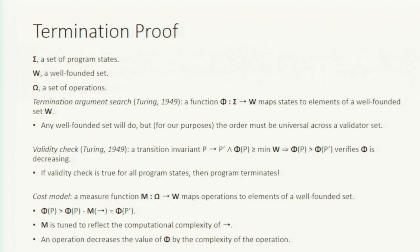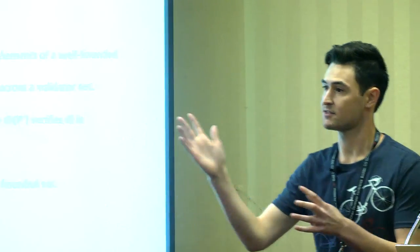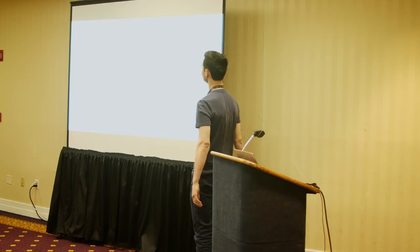The validity check — number two — says that the balance is decreasing. If p and p-prime are states with a transition from p to p-prime, and the balance of state p is greater than the minimum of W, this implies our balance decreases. As long as it's decreasing and we have a bottom, we know we have an endpoint, providing a termination proof. The second condition — phi of p greater than or equal to min of W — isn't automatically true because the function could bounce all over.